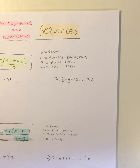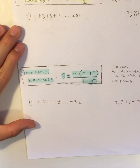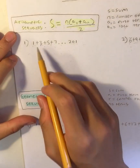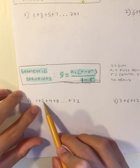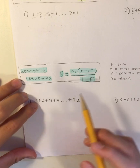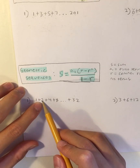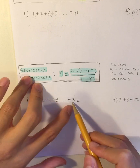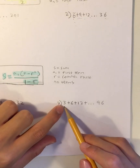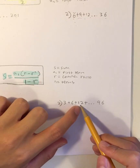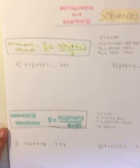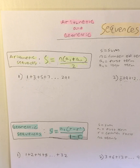But what is a geometric sequence? A geometric sequence is basically when there's a common ratio instead of a common difference. In this case the common ratio is 2, meaning 1 times 2 is 2, 2 times 2 is 4, 4 times 2 is 8, 8 times 2 is 16, and so on until 32. In another case, we have 3 times 2 is equal to 6, 6 times 2 is equal to 12, 12 times 2 is equal to 24, and so on until 96.